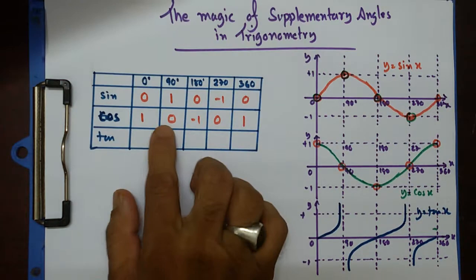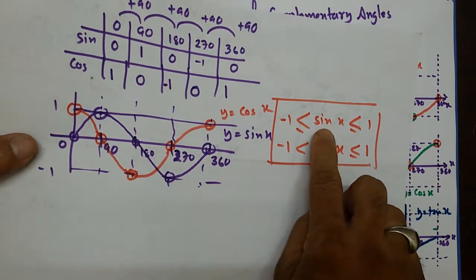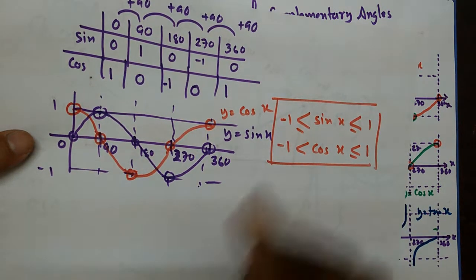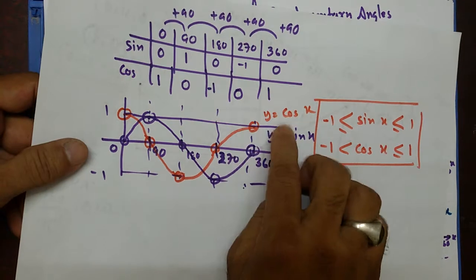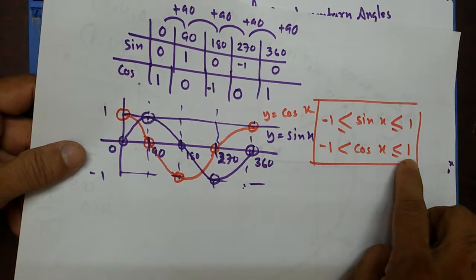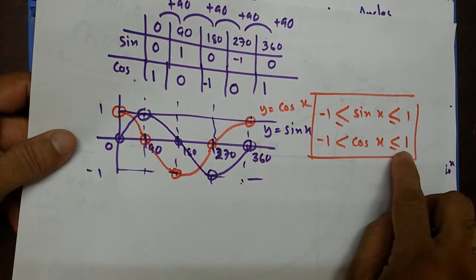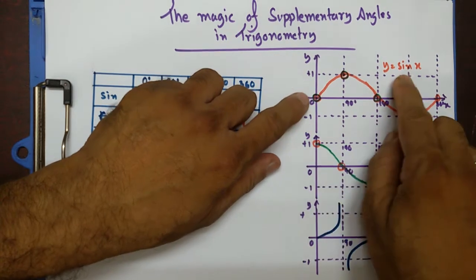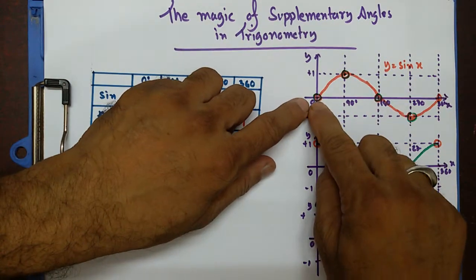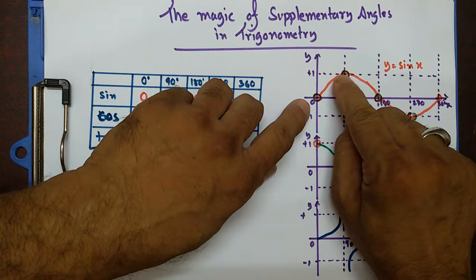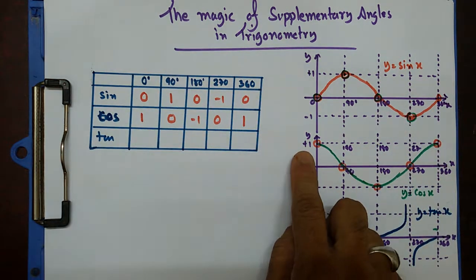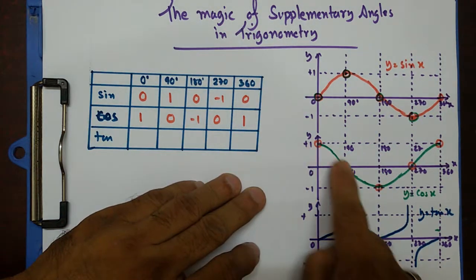And y equals cos x is the red one. The maximum value sine x can get is 1, and the minimum is minus 1 for the parent graph. Cos is the same — the highest or maximum value it can reach is 1, and the lowest it can go is minus 1. So you can see positive 1 and minus 1 for sine x, going from 0 to 1, back to 0, then down to minus 1 and back. The cosine graph behaves similarly.